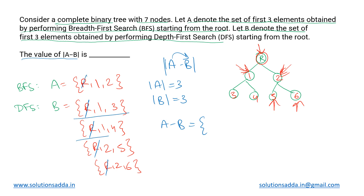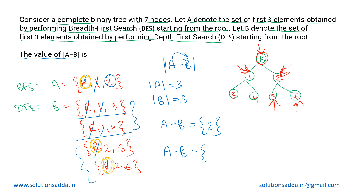For the first two cases — {r, 1, 3} and {r, 1, 4} — set A is {r, 1, 2}. Both r and one are present in both A and B, so they cancel. Node two is not present in these B sets, so A minus B gives {2}, with cardinality one. For the last two cases, A minus B: r and two are both present in A and B and cancel out. By definition, A minus B takes elements of A not present in B.